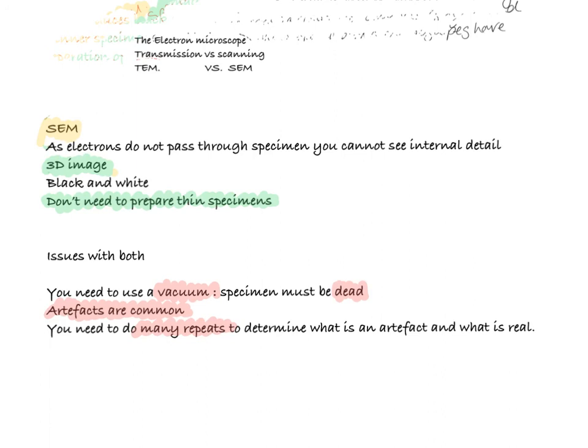And that's really everything that you need to know about electron and optical microscopes at this point. You need to make sure that you could explain the difference between optical, transmission and scanning electron microscopes. Well done.